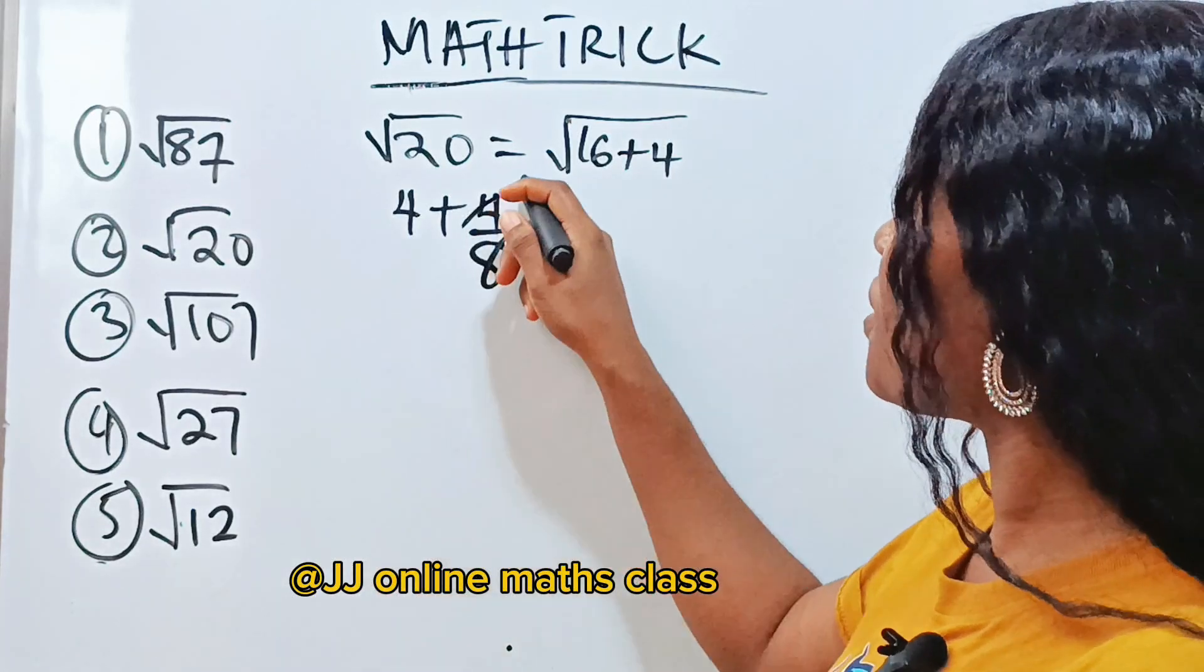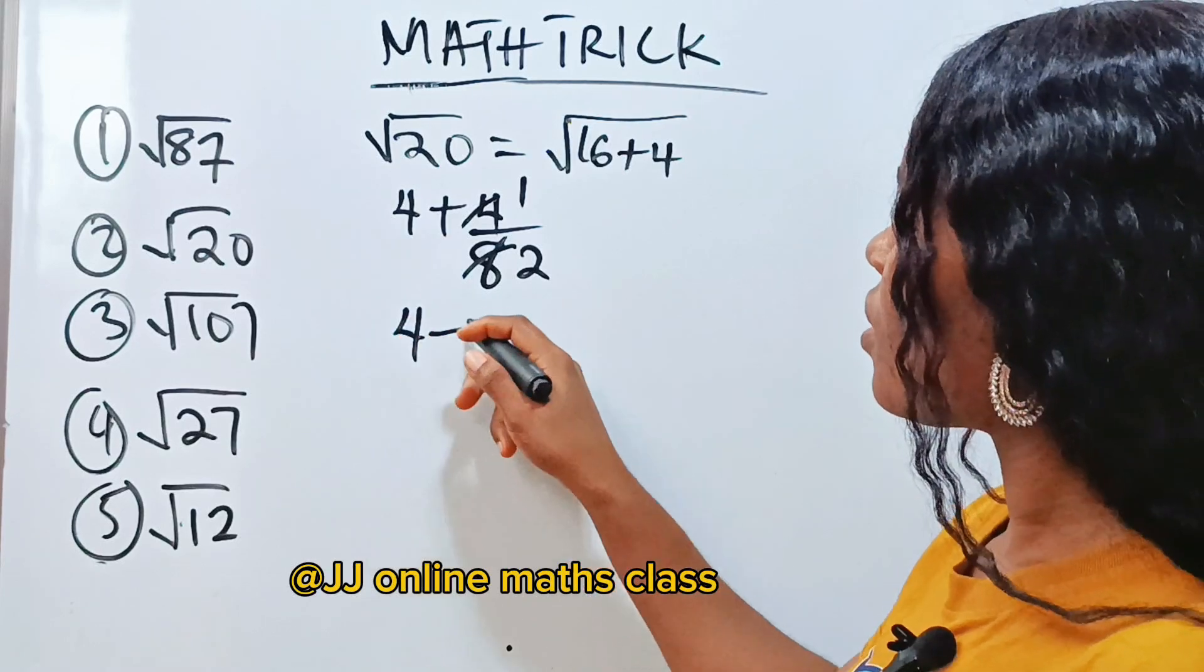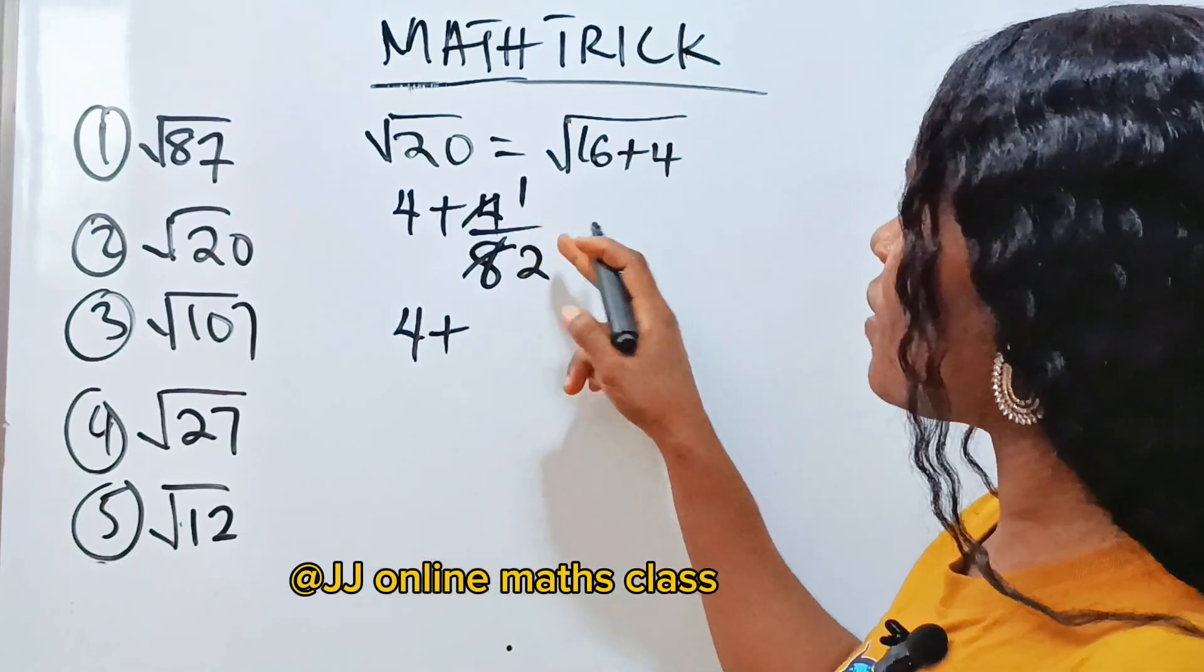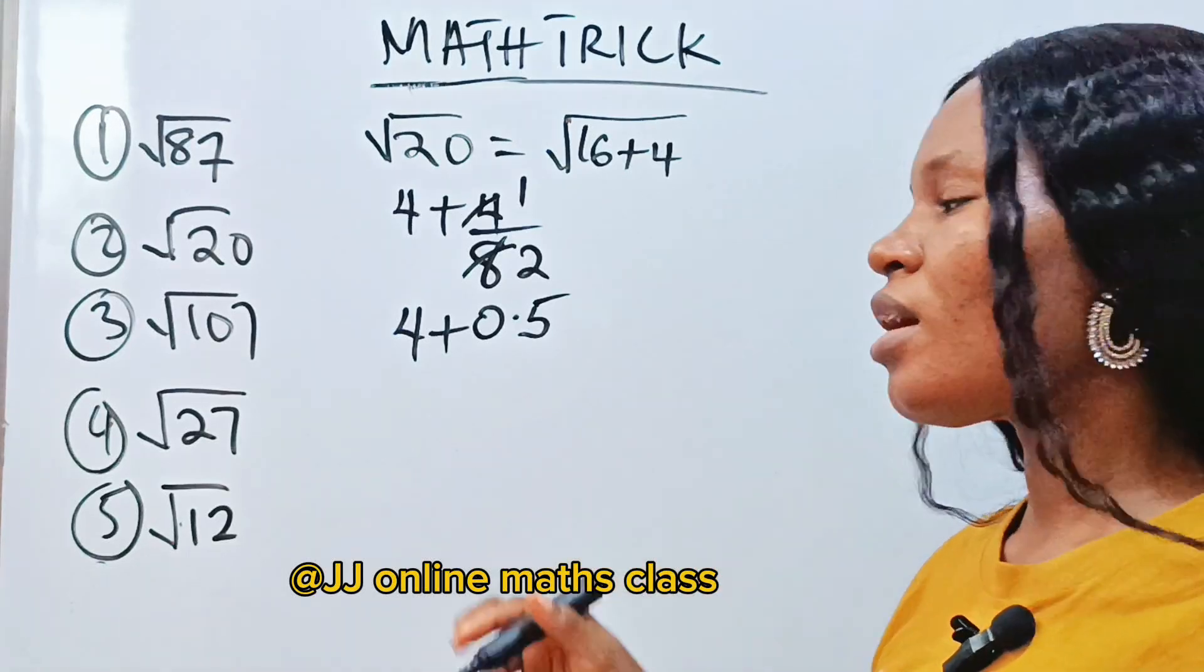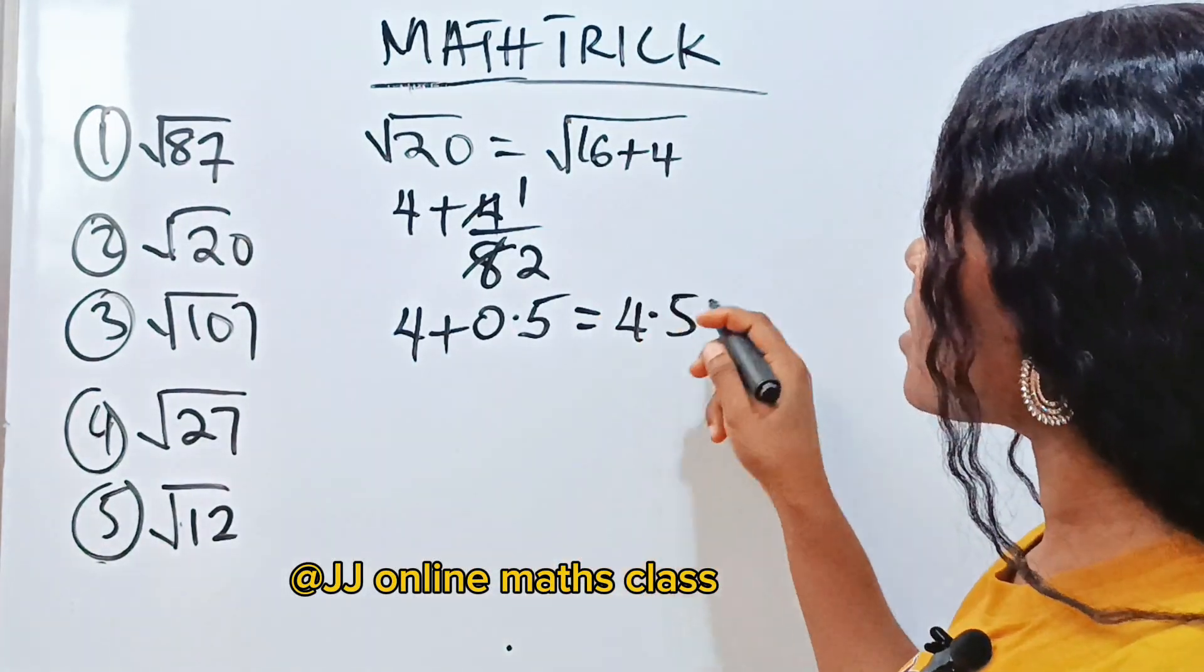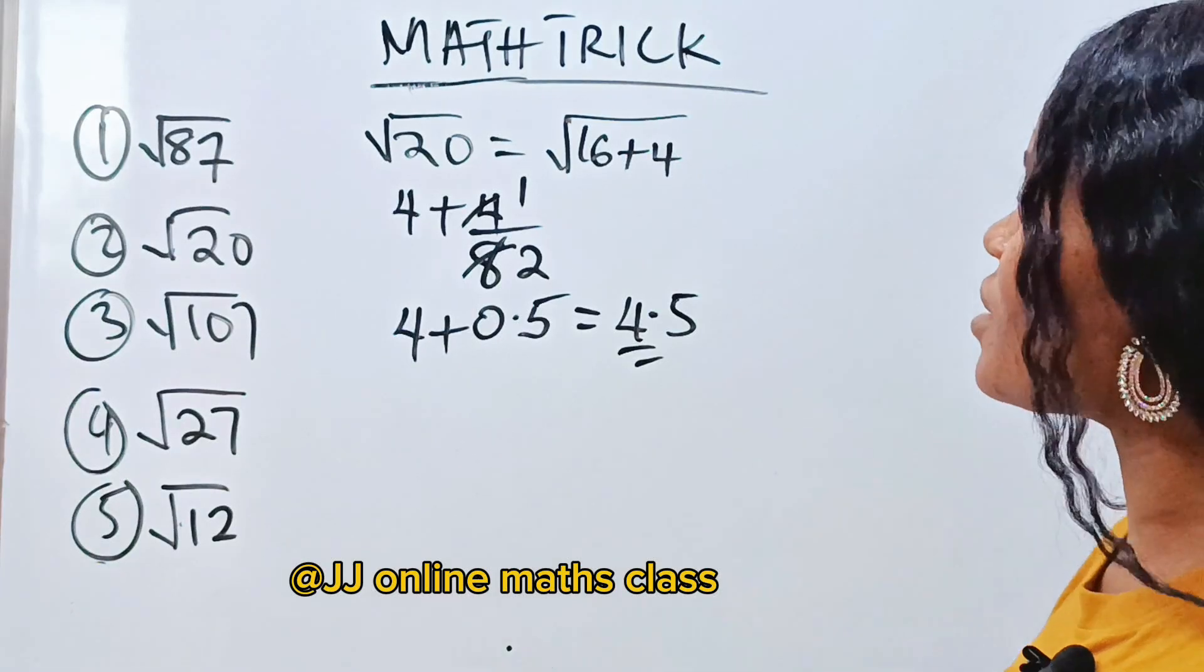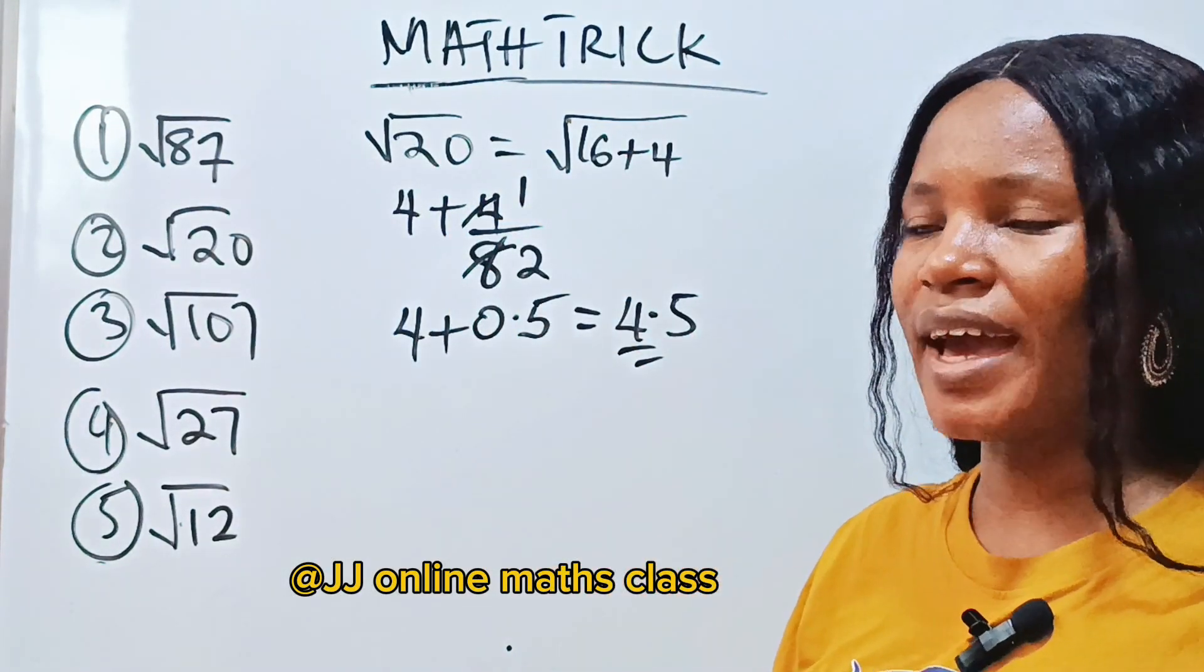4 divides itself 1. If we divide 8, we have 2. So we have 4 plus... Now 1 divided by 2 is 0.5. When you add these two together you will have 4.5. So it means that the square root of 20 is 4.5.